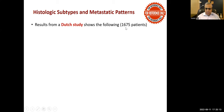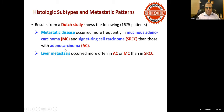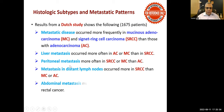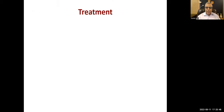Histologic subtypes of colorectal cancer are covered in a slide for reference only. A Dutch study on 1,675 patients identified subtypes including mucinous adenocarcinoma, signet ring cell carcinoma, and adenocarcinoma. Signet ring cells are also found in stomach cancers. This concludes the content for today; treatment will be covered in the next lecture. Students can send questions by email or WhatsApp.